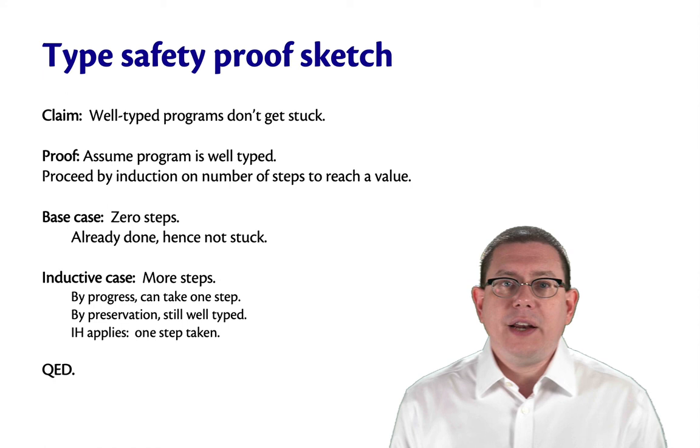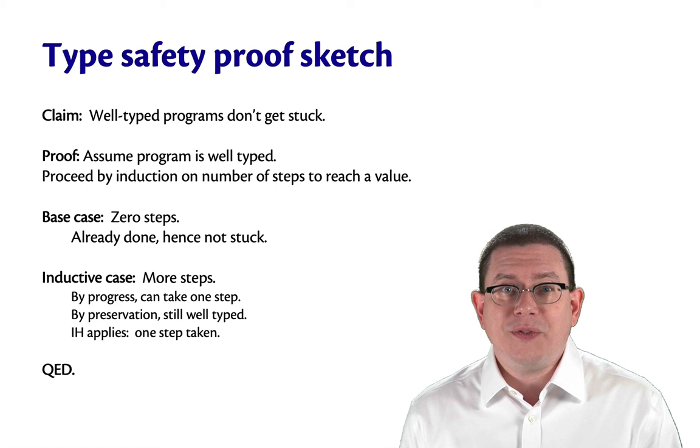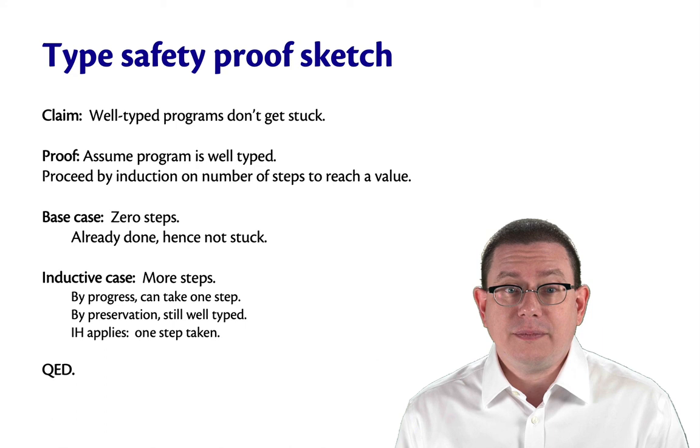Now this is not a kind of proof that I expect you to be able to do in this class. I just wanted you to see the structure of such a proof. If you're interested in knowing more about them, take CS 4110. But this is the goal. This is why we have type systems. They ensure that our well typed programs don't get stuck during evaluation.